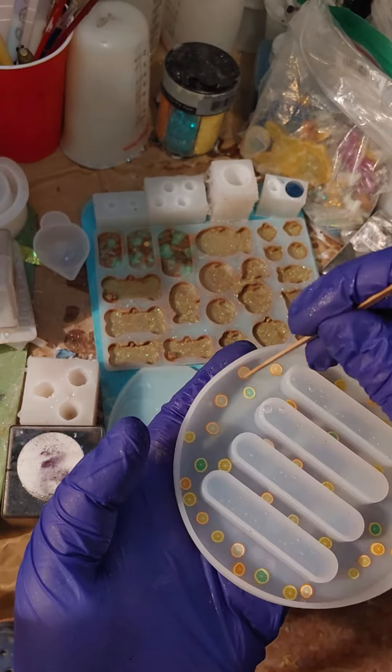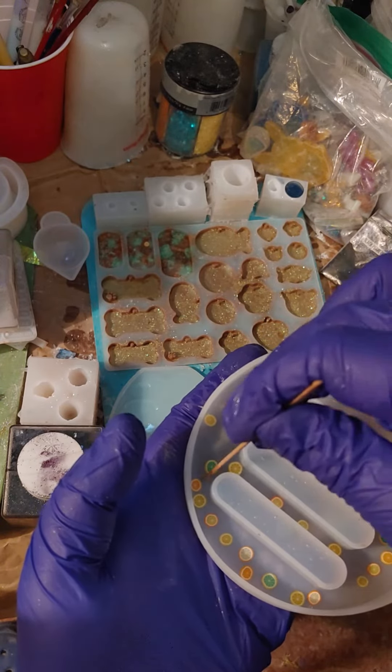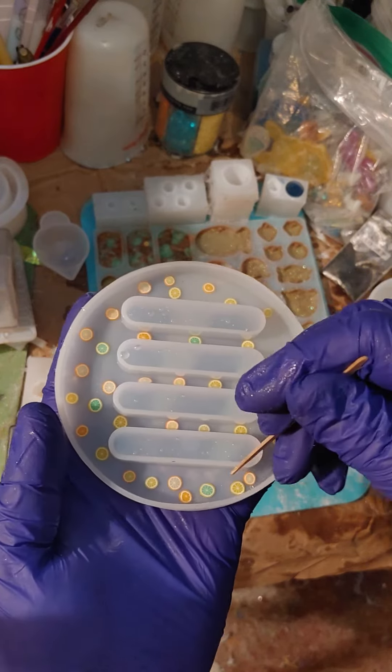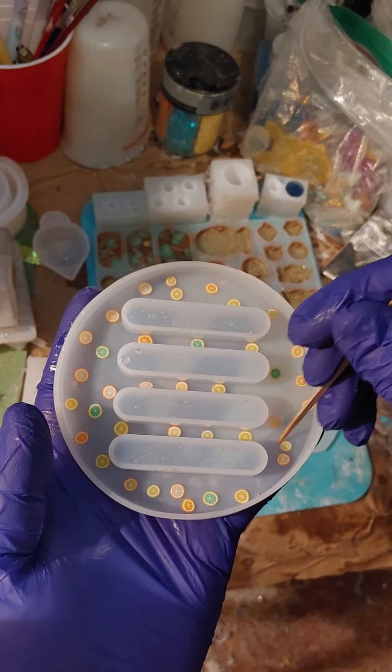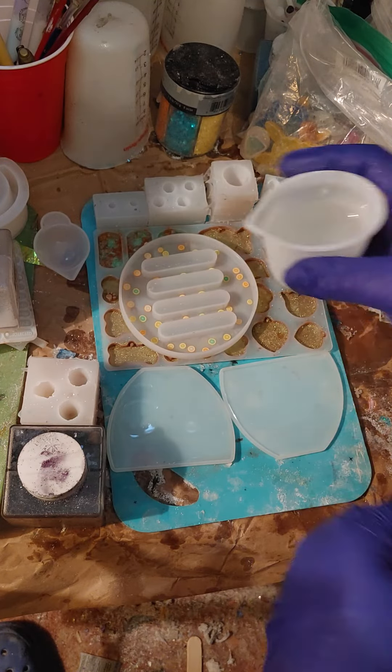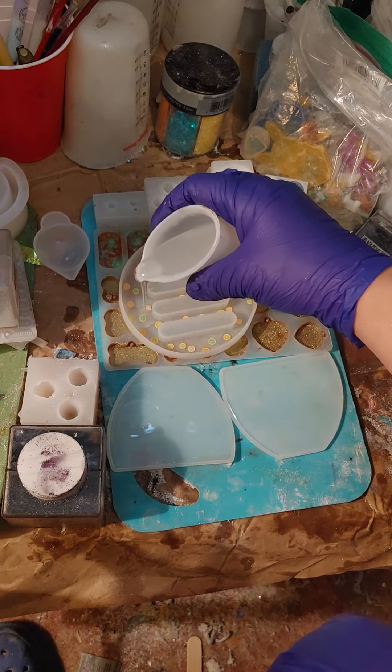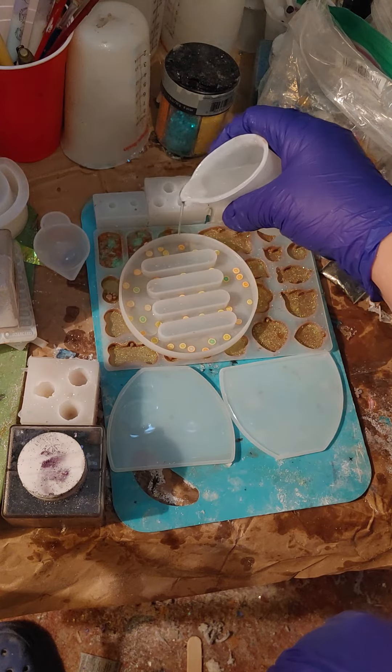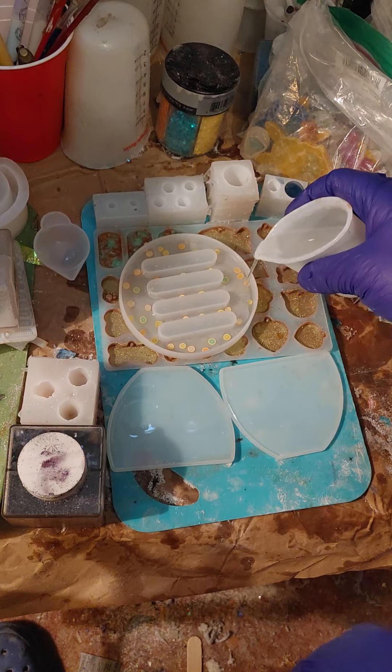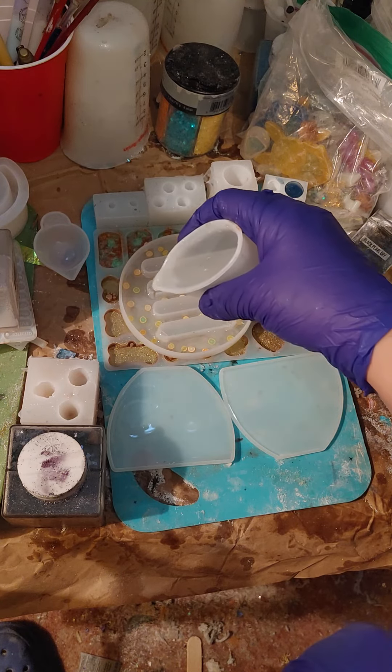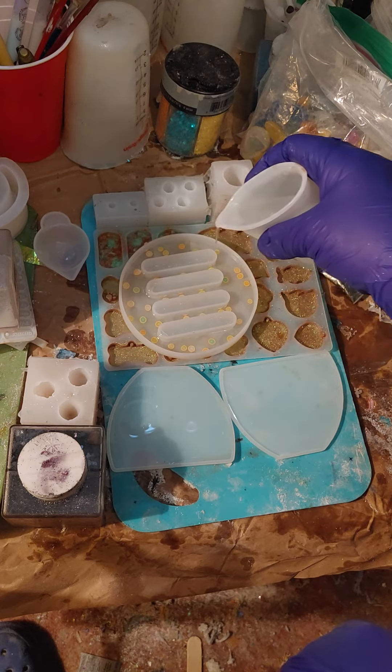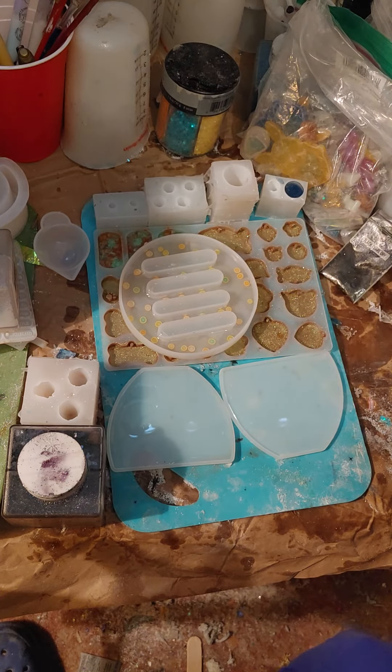So that I get plenty of room around, just like so, kind of like that. And then we're just going to add a nice thin layer of resin around the outside. And then just a little bit in the middle there. And perfect.